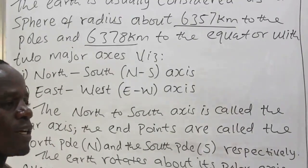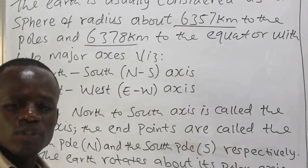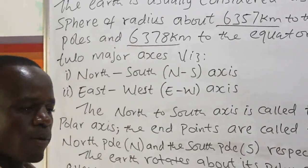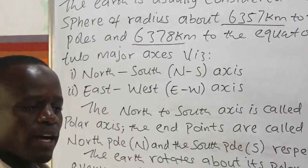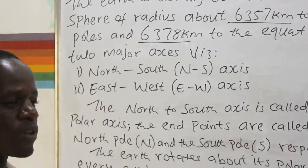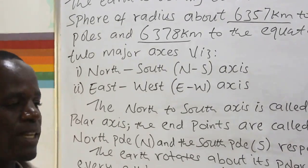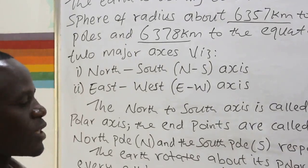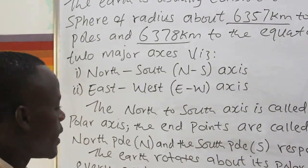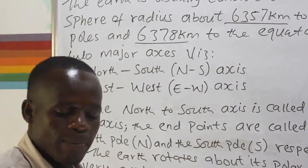That is why we say the earth is considered as a sphere but is not actually spherical. In geography there are proofs to show the earth is spherical — for instance, here in Nigeria we are in daytime, but if you go to another part of the world on the same earth, they are in the night. That is also proof why we say the earth is spherical.